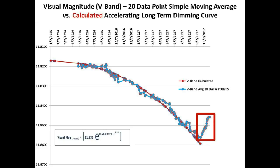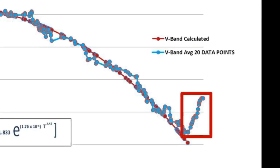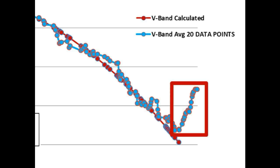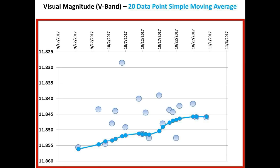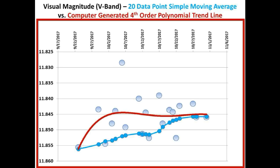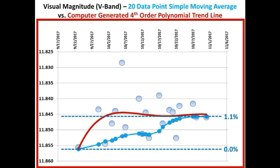The portion of the curve highlighted in the red box is where we witness this divergence from the accelerating long-term dimming curve. And as you can see, it agrees with Bruce Gary's data in magnitude and also shows the brightening seems to be losing some steam. This is David Lane's measurements taken in the V-band from September 23rd through October 31st, shown as a scatter plot with a 20-point simple moving average. Taking the fourth order polynomial trend line of this data, in about five weeks' time the flux of Tabby Star has brightened about 1.1% in the V-band and has now leveled off.